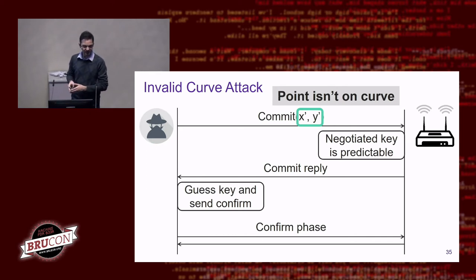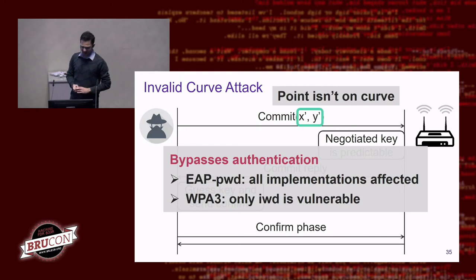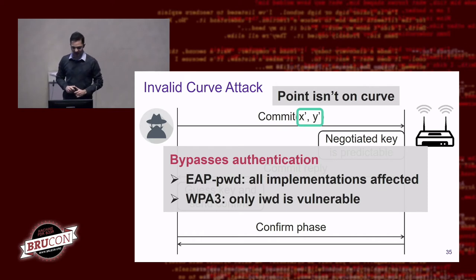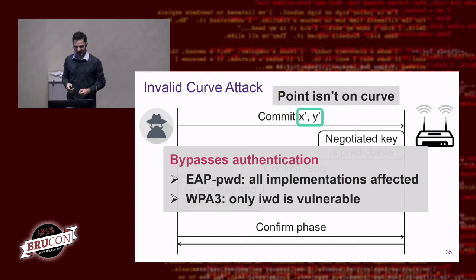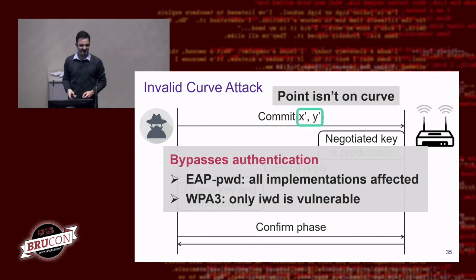With a 60%+ chance of guessing the key, we can continue the handshake as usual — and if successful, we've completely bypassed authentication, meaning we can log in under any username or access the WPA3 network without knowing the password. Surprisingly, we found that all EPWD implementations we tested were vulnerable to this attack. The only bright side is that EPWD implementations using a newer version of OpenSSL — which already contains a defensive check — won't be vulnerable. But using FreeRadius or Radiator with an older maintained OpenSSL version leaves you open to bypassing authentication entirely.